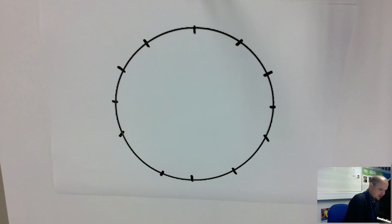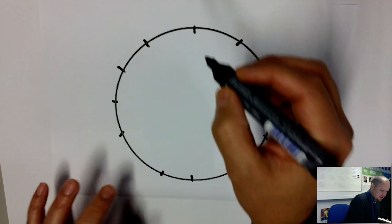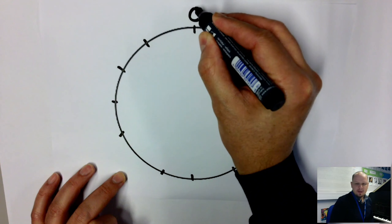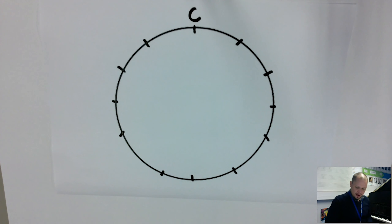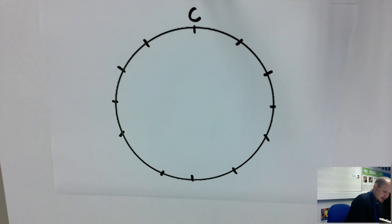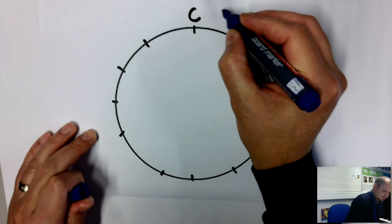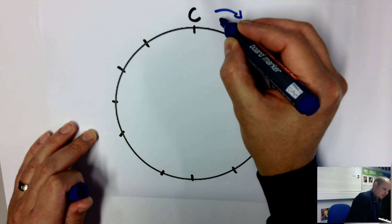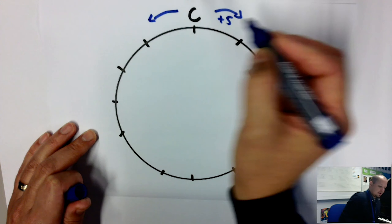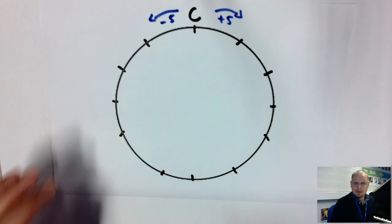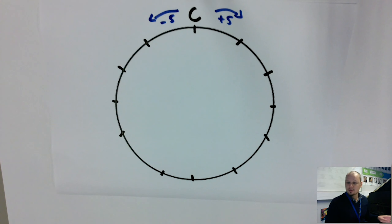On top we'll start at C major. C major has no sharps and flats — that's what you need to remember. Your start is C. It's called the circle of fifths because going clockwise we are adding five, and going counterclockwise we are going backwards, minus five.